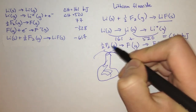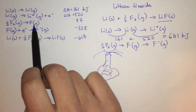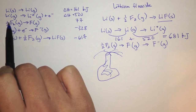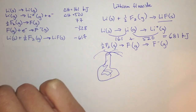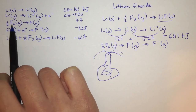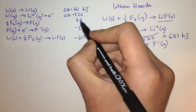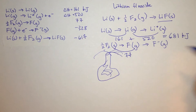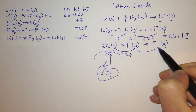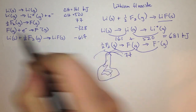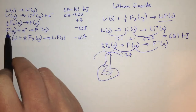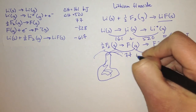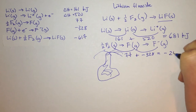We can do the same thing with fluorine. To break the bond, we should always be careful when using these equations, because sometimes they take one F2 and make two F. This time, they were nice enough to take half of an F2 and make one F, so we can take the 77 kilojoule number and use it directly. Going from fluorine gas to an F minus ion is negative 328 kilojoules. Adding these up, we get negative 251 kilojoules.